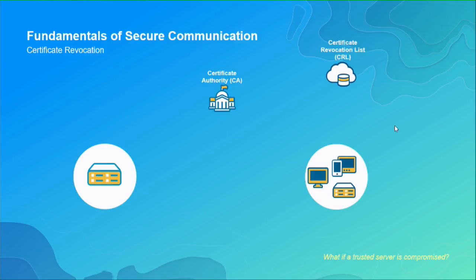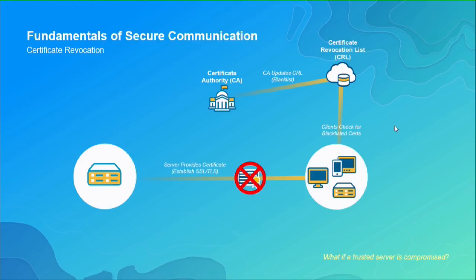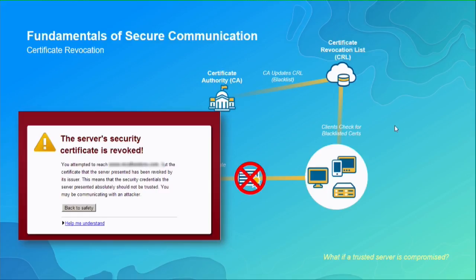Certificate authorities also issue Certificate Revocation Lists (CRLs). If a certificate is compromised — for example someone obtained your private key — you can ask DigiCert to revoke it. The certificate checks against the CRL when used, and if revoked, browsers will warn that the server certificate has been revoked. You may not encounter this often, but it's a recognized practice.